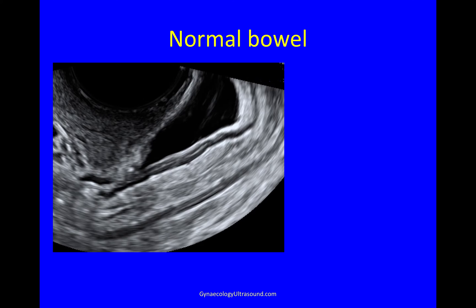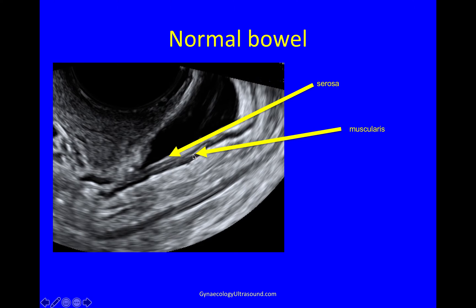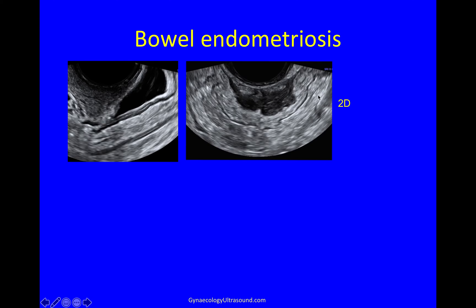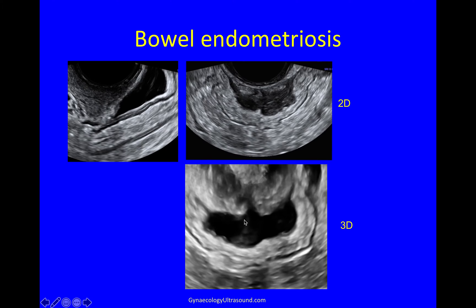Endometriosis is very nicely seen on 3D. Here is a 2D image of normal bowel viewed through the posterior fornix. With a little fluid in the pelvis you can see the bowel layers clearly: the hyperechoic line is the serosa, the hypoechoic line with some hyperechoic signal is the muscularis, then submucosa and mucosa on both sides, muscularis again, and serosa distally. Bowel endometriosis affects the muscularis layer — here you can see normal muscularis entering and exiting, while all of this hypertrophied muscularis is caused by deep endometriosis. On 3D you get a bit more detail.